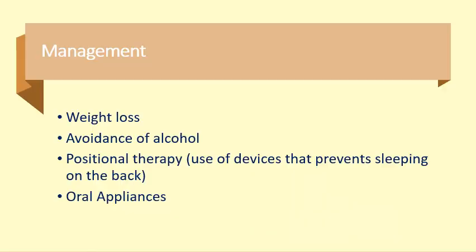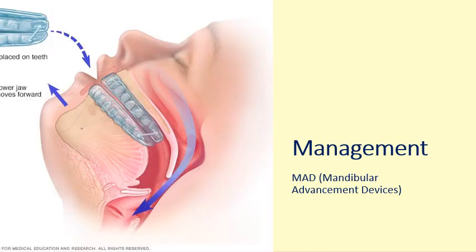Since obesity is the major factor for this disorder, management includes weight loss, avoidance of alcohol, and positional therapy — the use of devices that prevent sleeping on the back. There are also oral appliances. One management option is the mandibular advancement device, or MAD. A MAD is inserted into the patient's oral cavity such that the mandible is guided to move forward, relieving compression of the tongue.